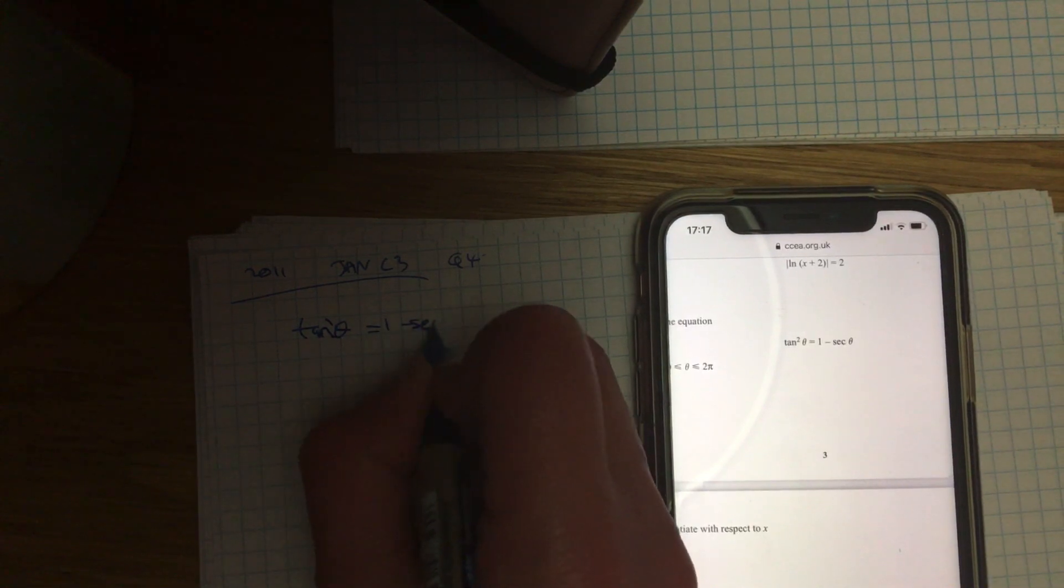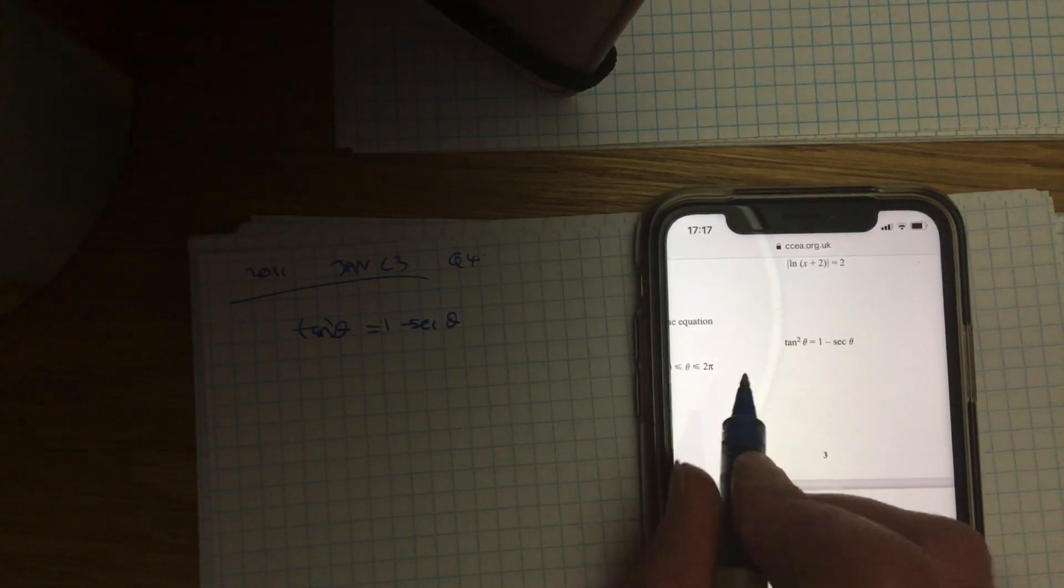tan squared theta equals 1 minus sec theta, between 0 and 2 pi.